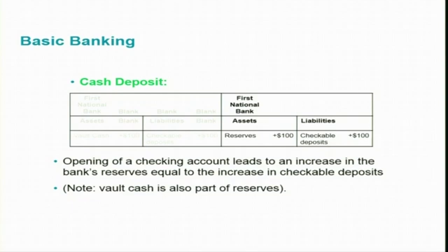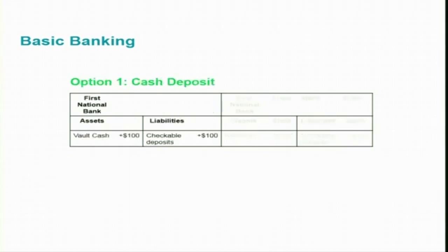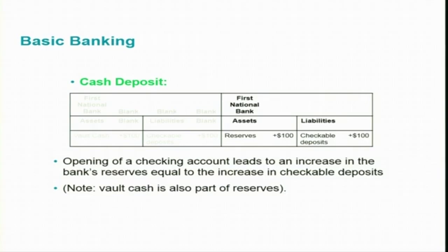Opening a checking account leads to an increase in bank reserves equal to the increase in checkable deposits. Vault cash is also part of reserves. So the bank's T-account looks like this: reserves increased by $100 and checkable deposits also increased by $100.